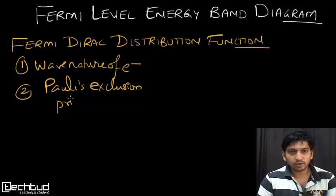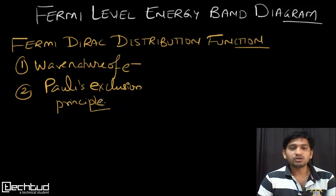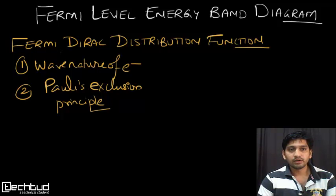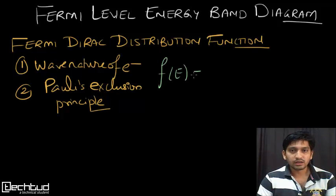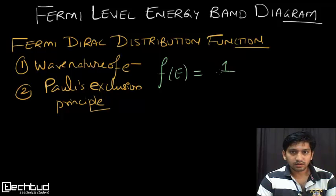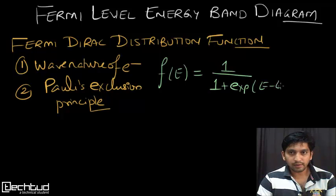We are not going into the experimental derivation of how these terms arise; we are going to accept the results as given by the scientific community. The Fermi-Dirac distribution function F(E) is given by 1 divided by 1 plus exponential of (E minus EF) divided by kT.